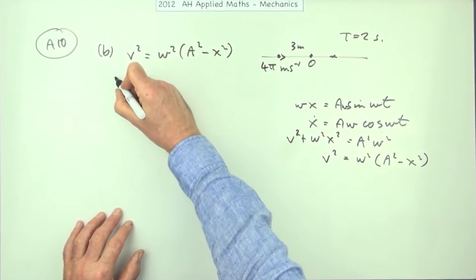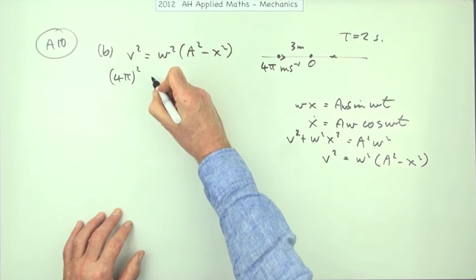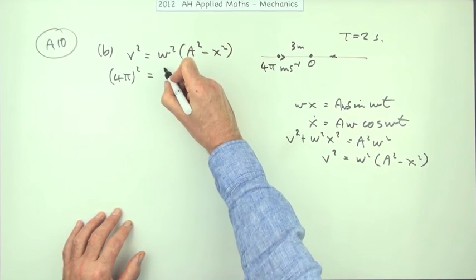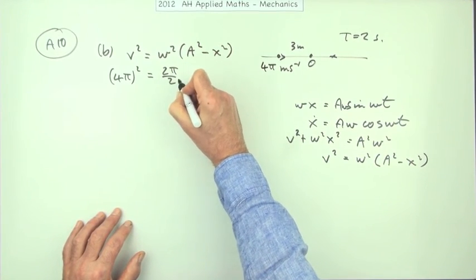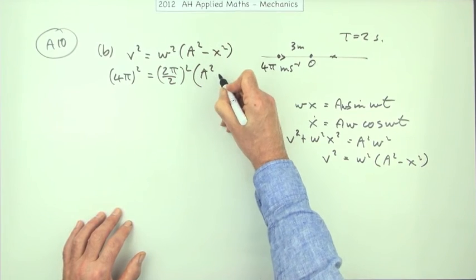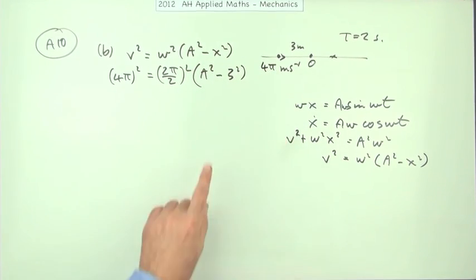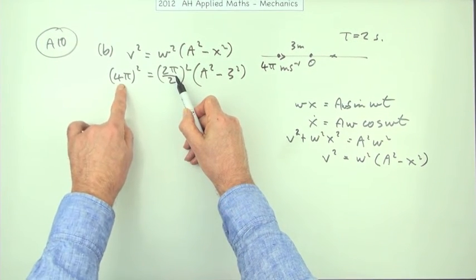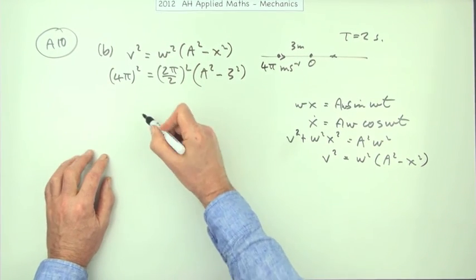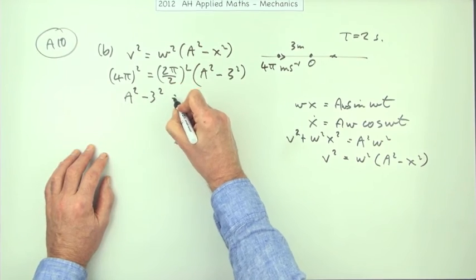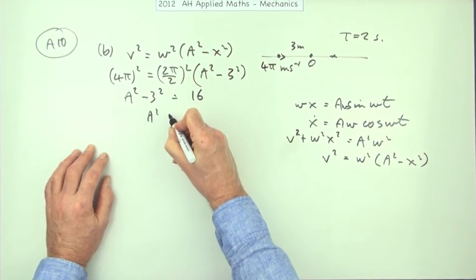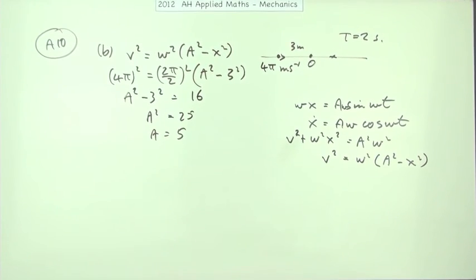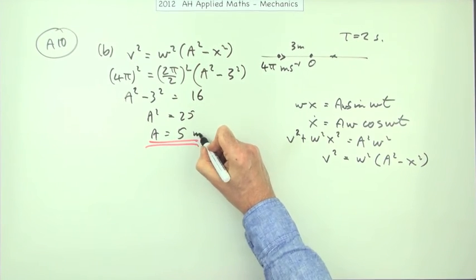So v squared is 4 pi squared. Omega will be, if t is 2 pi upon omega, that will be 2 pi upon 2 squared, times a squared which I don't know, minus 3 squared. Now the only thing I don't know is a. Well, what have we got here then? I've got pi squared and 16 pi squared, so 16 pi squared divided by pi squared will just be 16. So you've got a squared minus 3 squared equals 16. So a squared is going to be 16 plus that, which is 25, so a is going to be 5. Amplitude 5 metres.